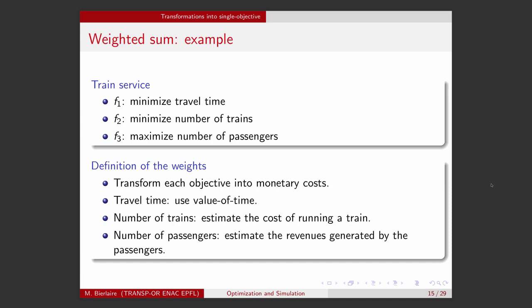And my third objective is to maximize the number of passengers that are traveling in my system. So, the first objective is in minutes. The second objective is number of trains. And the third objective is in number of passengers. So, three different units.